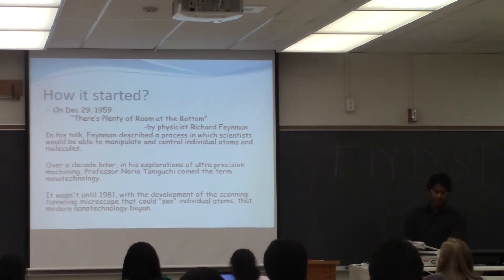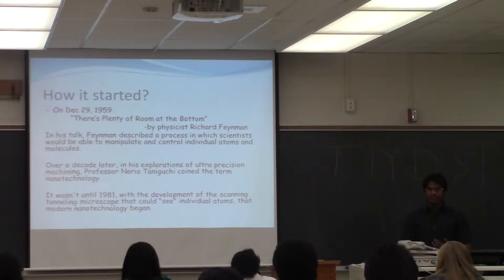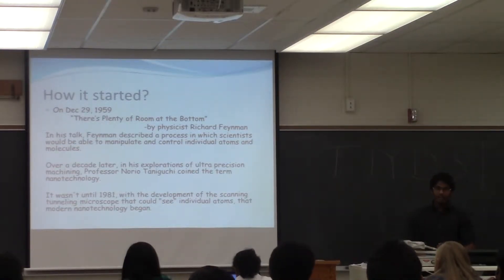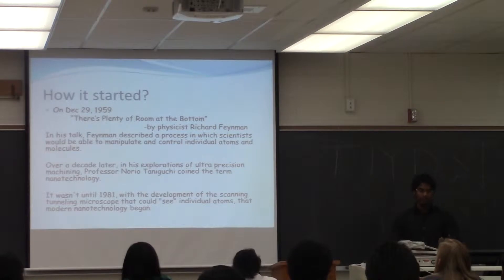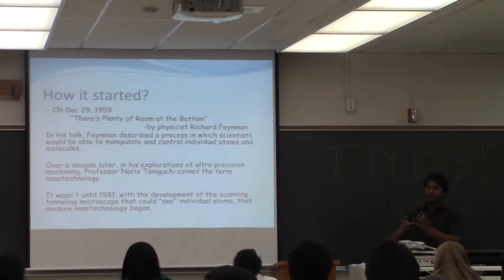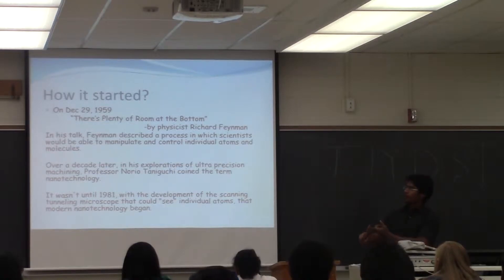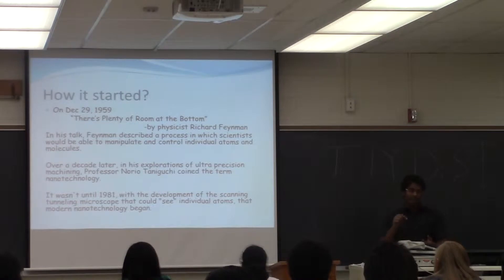Let us go to the past — how it all started. On December 29, 1959, a physicist by the name Richard Feynman, in his lecture, described a process in which scientists would be able to manipulate and control individual atoms and molecules. A compound is made up of atoms and molecules, so he went down to the level of atoms and talked about nanoparticles. He said, 'There is plenty of room at the bottom,' meaning he narrowed down to the atoms and spoke about this.